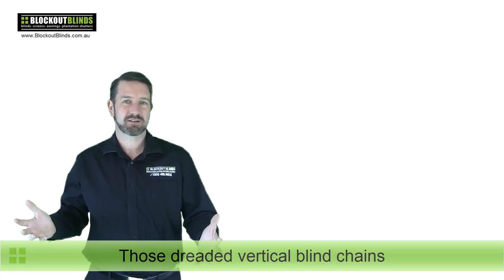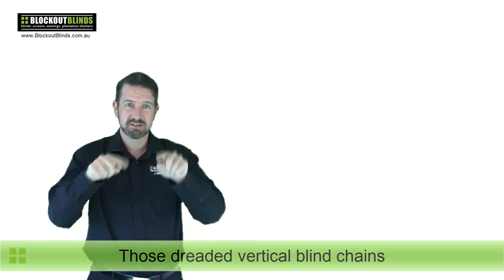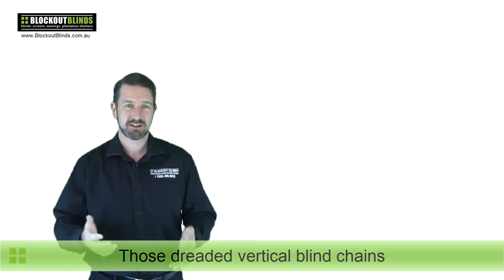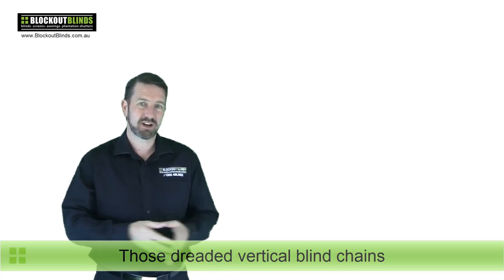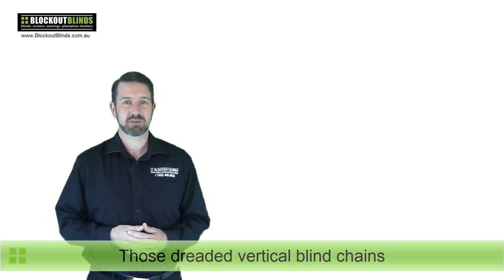We all know vertical blinds and we all know that they have those chains that go along the bottom that connect the slats to each other as we can see in this picture here.